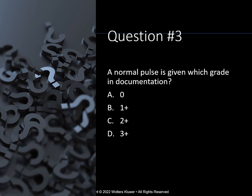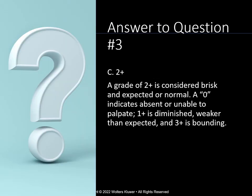Question 3 says: a normal pulse is given which grade in documentation? A, 0; B, 1+; C, 2+; or D, 3+. The answer is C, 2+. A grade of 2+ is considered brisk, expected, or normal. A grade of 0 indicates absent or unable to palpate, 1+ is diminished or weaker than expected, and 3+ is bounding.